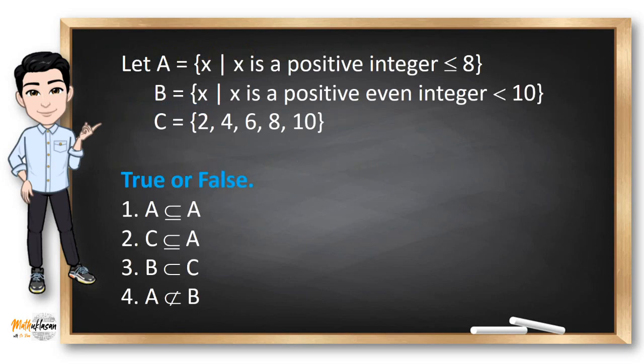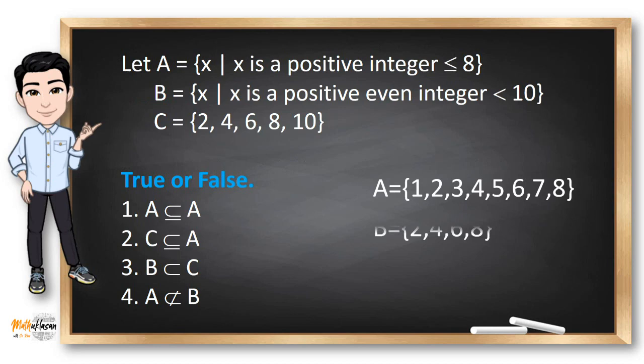Let A be the set containing X such that X is a positive integer less than or equal to 8. Listing all the elements of A, we have 1, 2, 3, 4, 5, 6, 7 and 8. Set B has elements X such that X is a positive even integer less than 10, so listing those elements we have 2, 4, 6 and 8. True or false: Number 1 — is A a subset of A? This is true because all elements of A are in A.